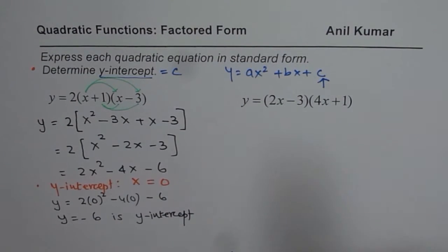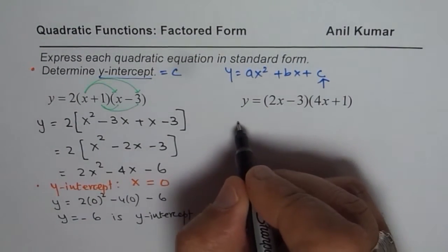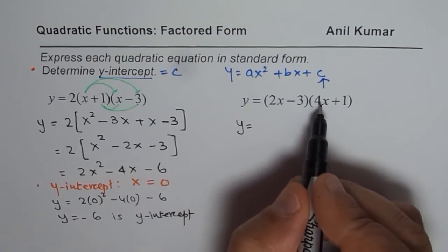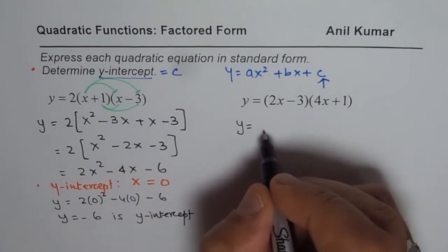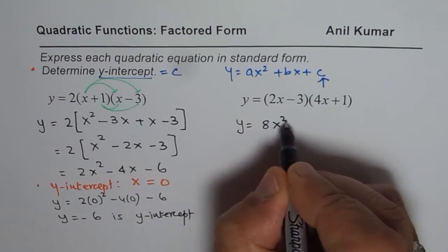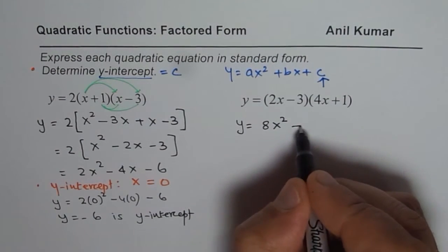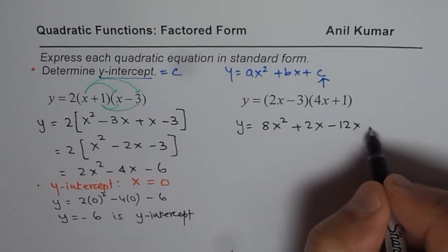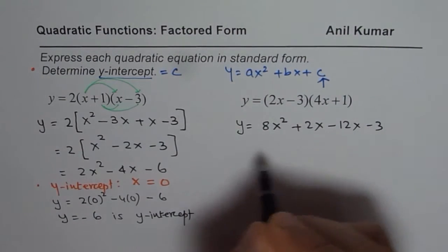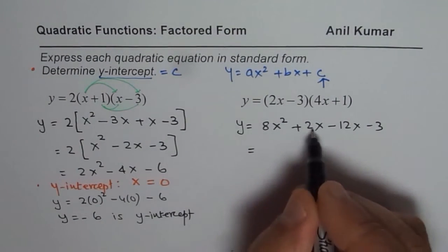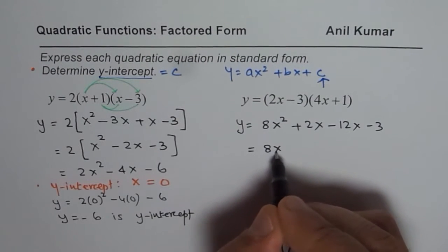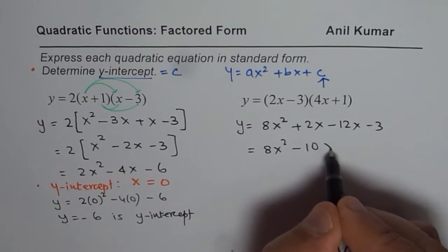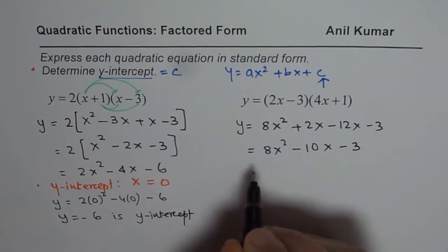Now let us do the second equation. We expand using the distributive property. 2x times 4x gives 8x squared. 2x times plus 1 gives plus 2x. Then minus 12x and minus 3. Combining the like terms: 2 minus 12 is minus 10, so we get 8x squared minus 10x minus 3.